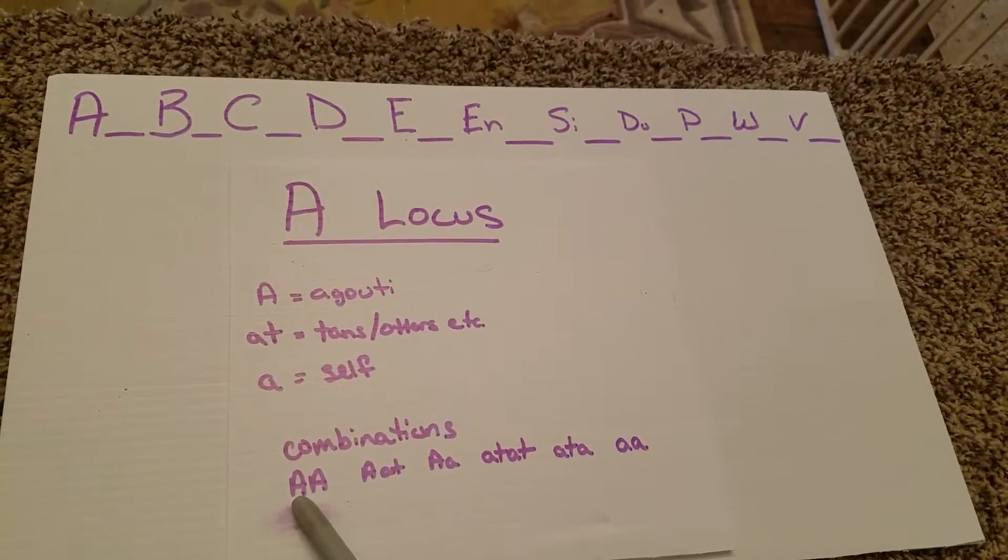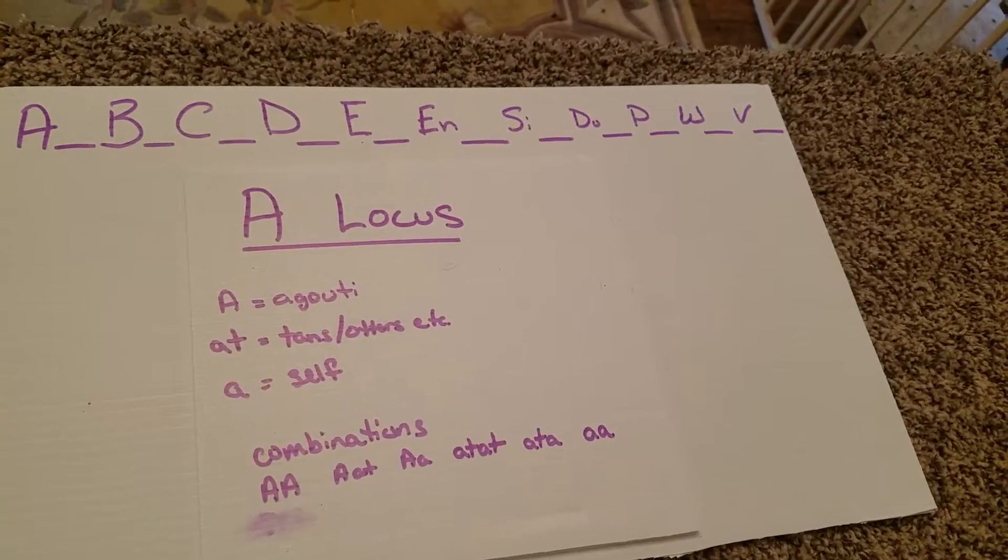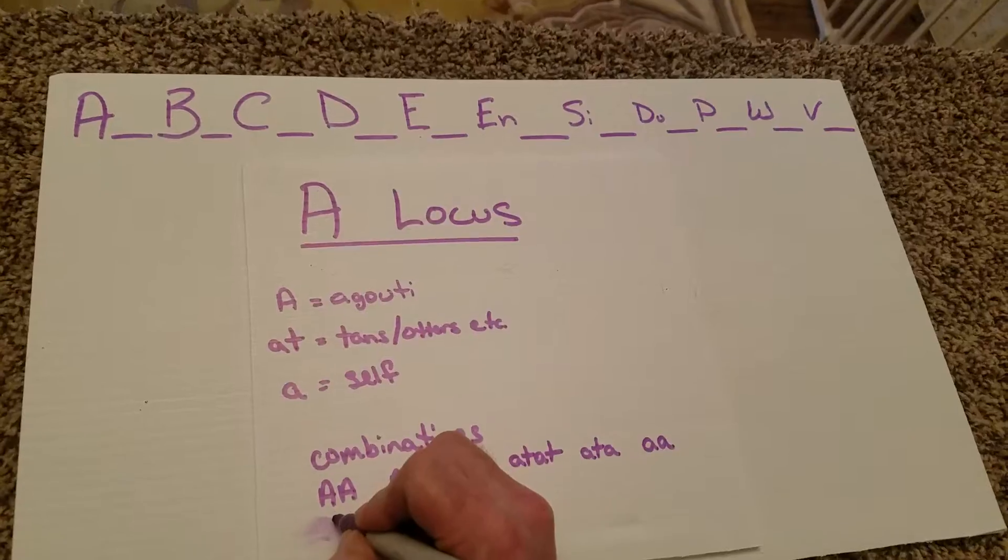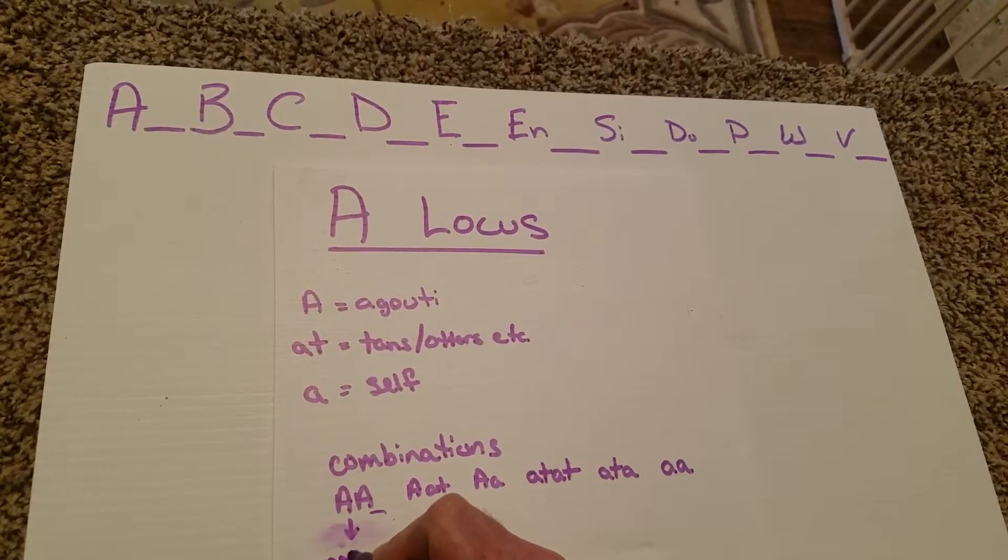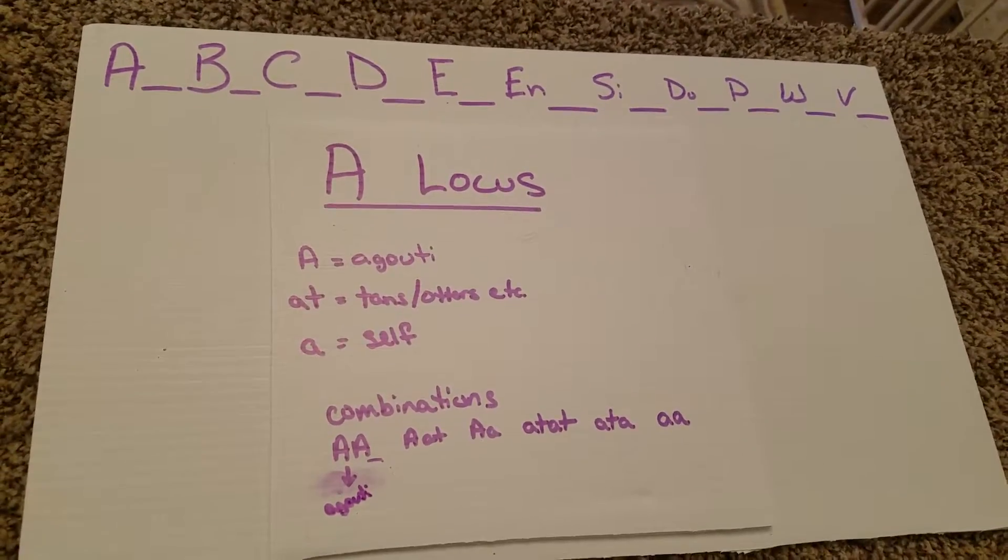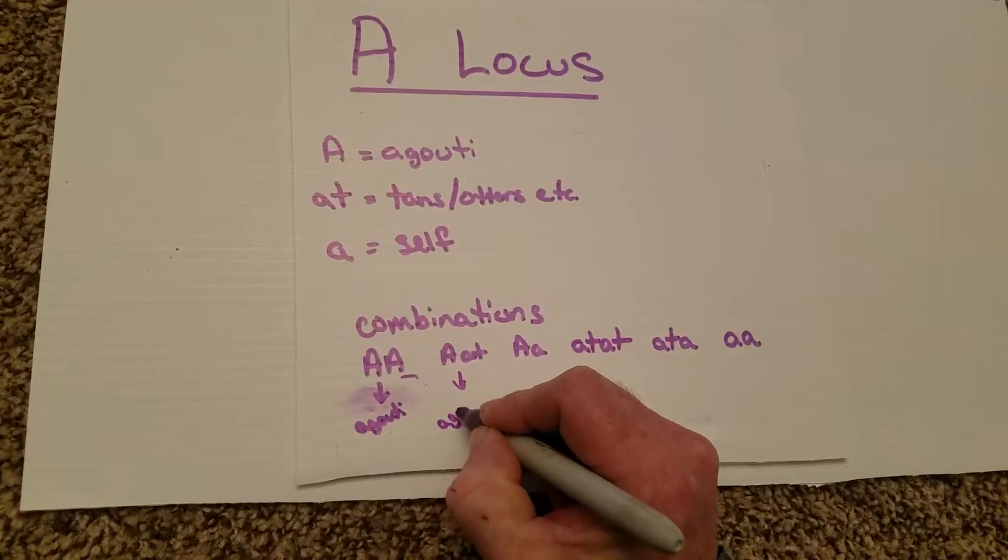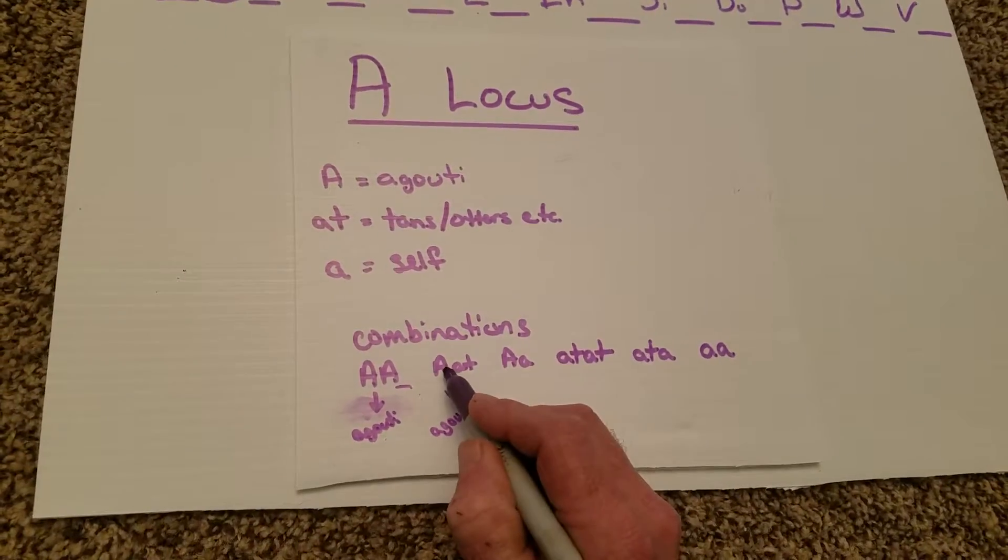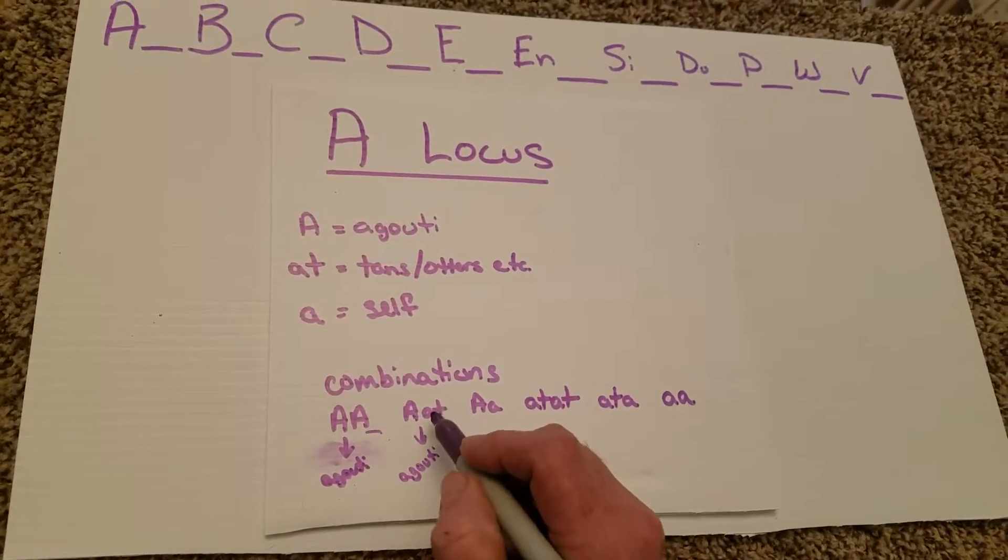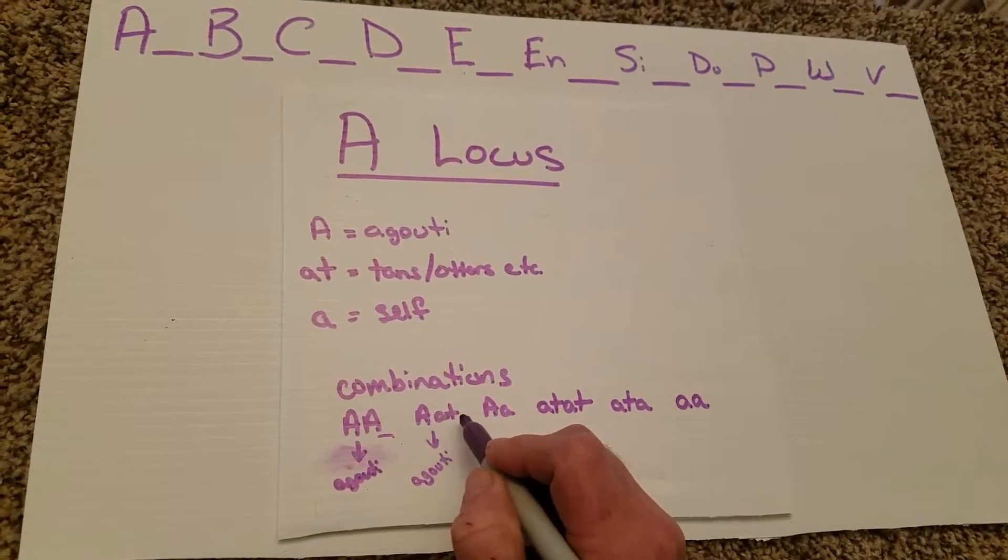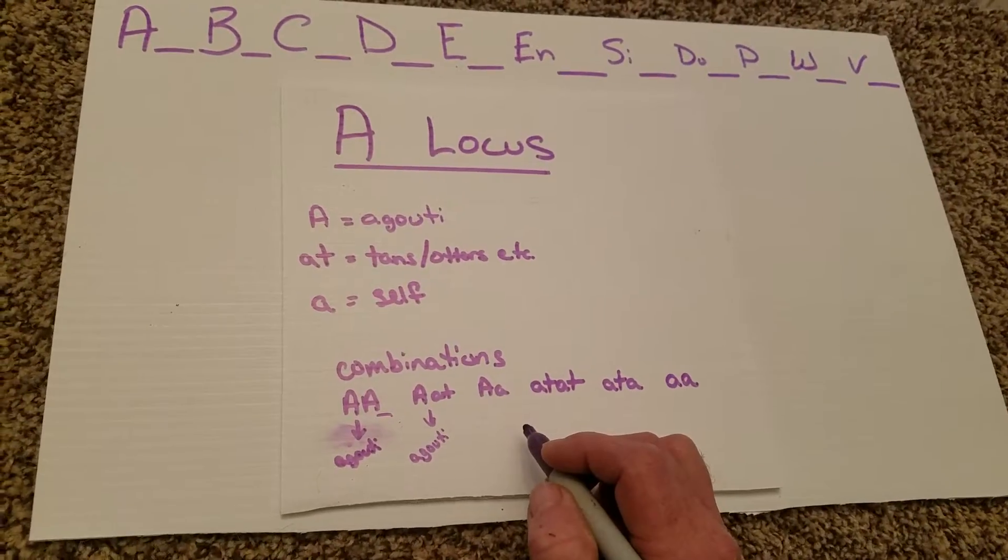You can have double agouti. You could have agouti with a tan which is less dominant. Now one thing I will note here is that if you have this combination, you're going to get an agouti rabbit. It's going to be an agouti. If you're going to have this combination, it's going to be an agouti. And the reason we know it will be agouti is because A is dominant. Agouti is dominant over the tan. This tan gene will not present in the color of the rabbit. It will remain hidden in the gene set.